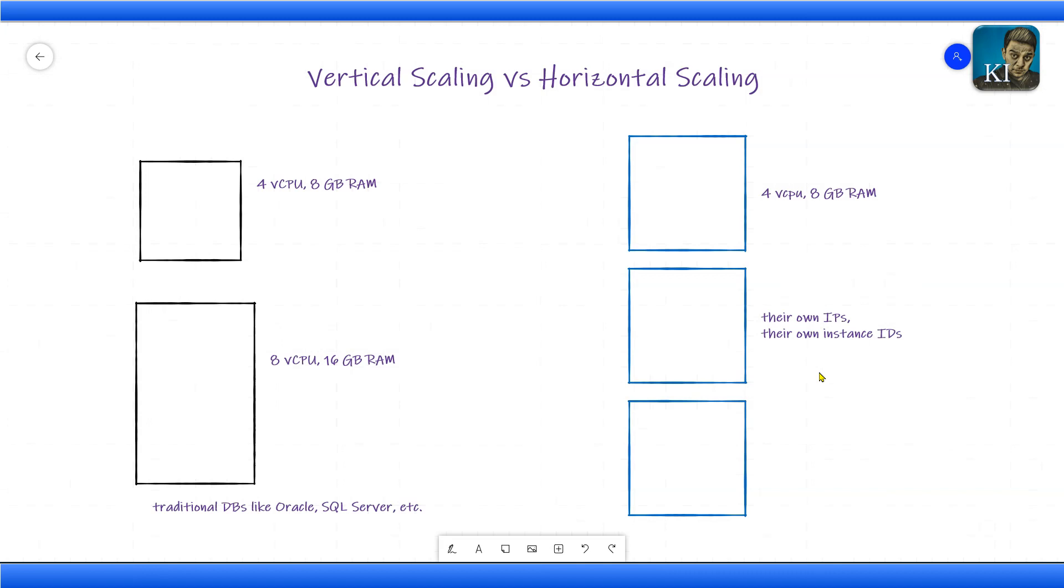This is horizontal scaling. In case of horizontal scaling, you will add more and more instances or more nodes. The important thing to understand is when you are doing horizontal scaling, when you added these two new instances, you did not have to stop the first instance.